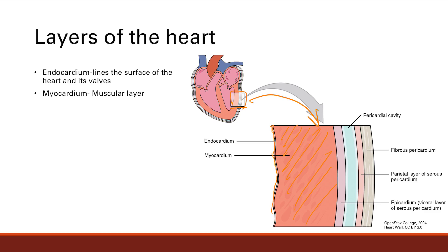Next is the pericardium. The pericardium has three layers. The first layer is the visceral layer of the serous pericardium. Then we have a pericardial cavity — that's not a layer, that's just fluid. And then next we have the parietal layer of the serous pericardium.